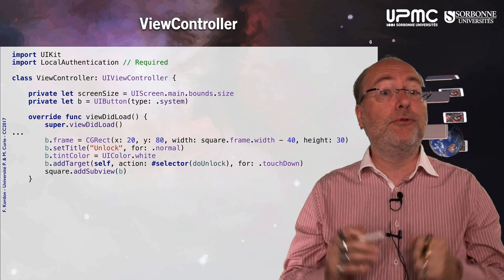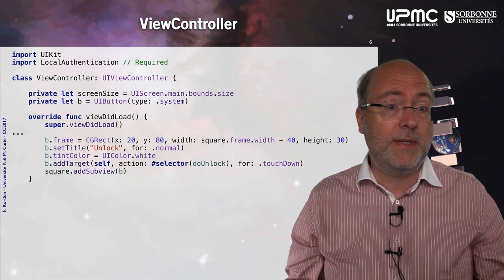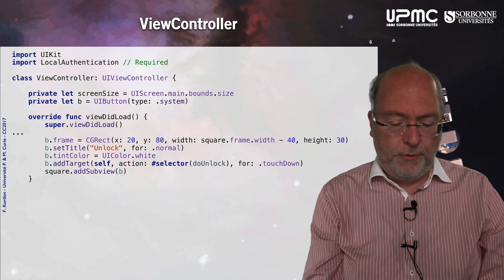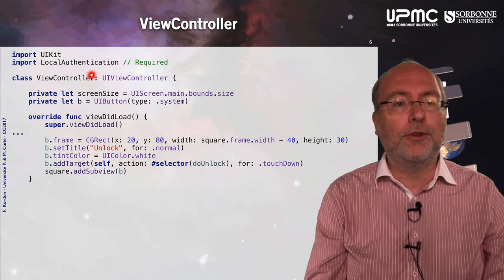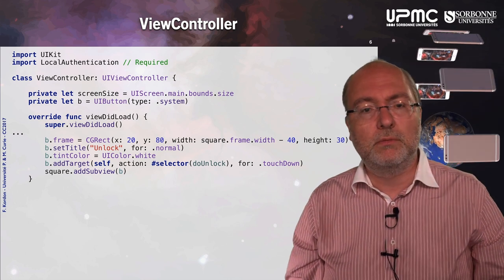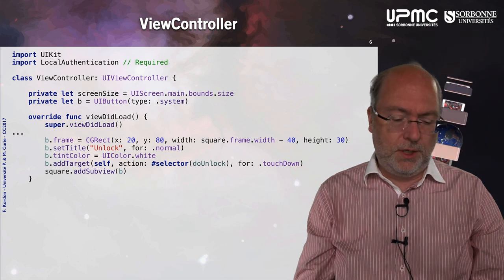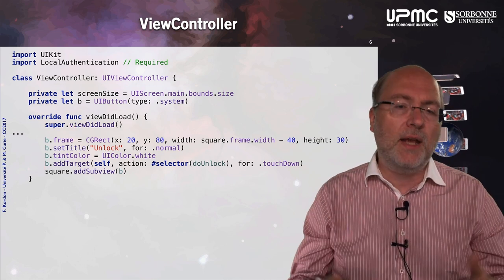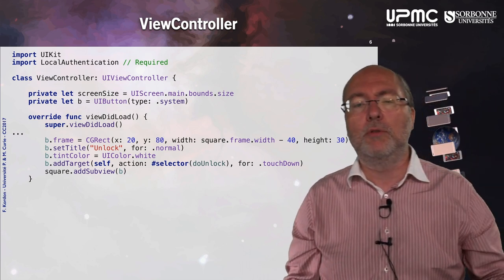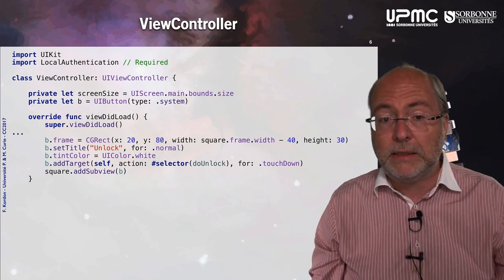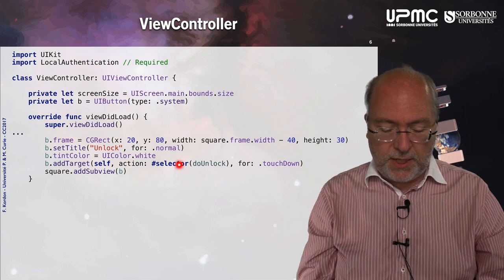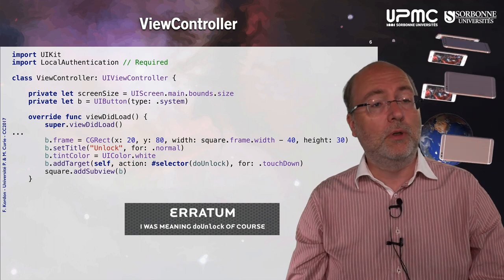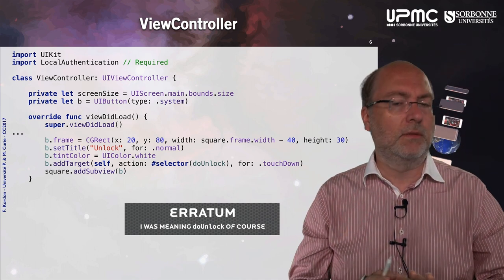Let's have a look at the view controller of this application, because everything is in the view controller. The first important thing is to import the framework LocalAuthentication. Here in viewDidLoad — I won't go over how to build the view, you can mimic it if you want to reproduce my example. What's important is that in my button I will refer to a method called unlock.